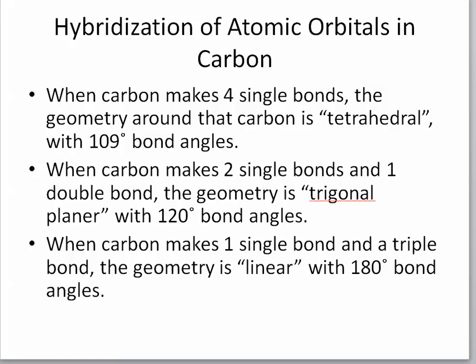When you take standardized tests on organic chemistry, like the MCAT or the PCAT, sometimes they have questions related to hybridization. These slides talk about what you generally need to know to answer those questions. This topic has to do with how we explain theoretically what we know to be true from experiment: when carbon makes single bonds it has a tetrahedral geometry, double bonds involve trigonal planar geometry, and triple bonds involve a linear arrangement. We'll talk about each of these three cases and how the type of bonding correlates to these shapes and bond angles.